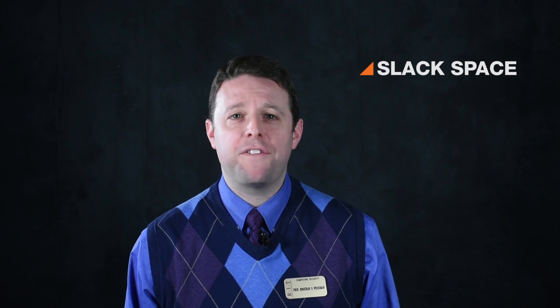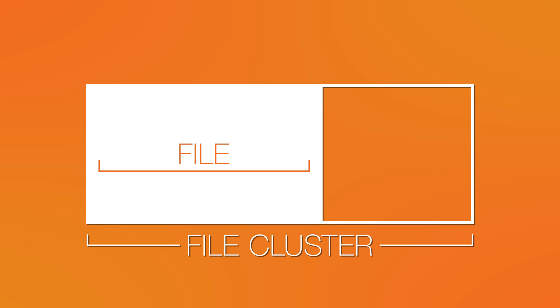Hard drives store files in clusters of a certain size. Slack space represents the location of the end of a file on a hard drive to the end of the file cluster that the file is stored in. In this slack space, a forensic investigator can find deleted files, or at least fragments of deleted files and hidden data. Since log files are often deleted by cyber criminals, these may show up in slack space.